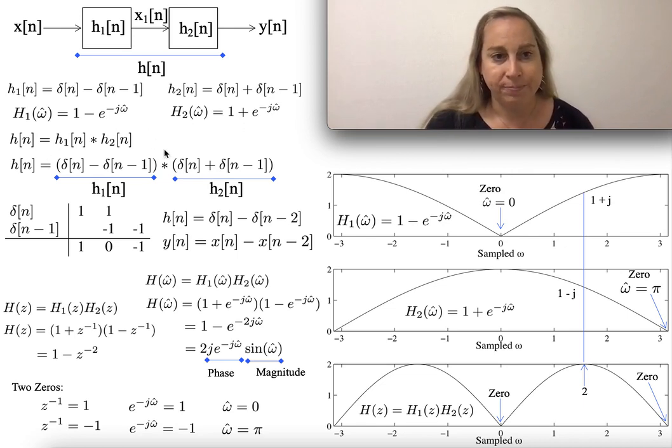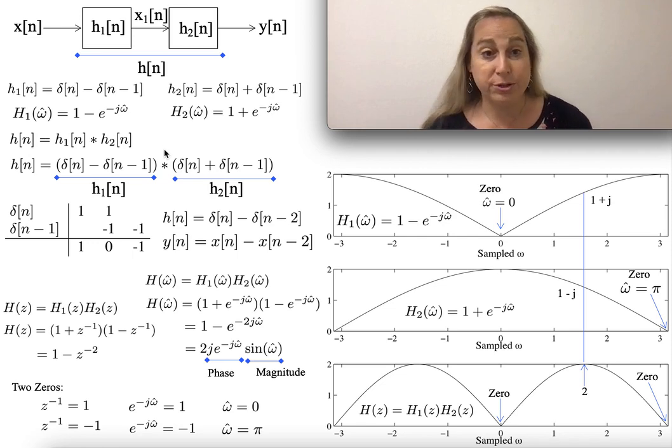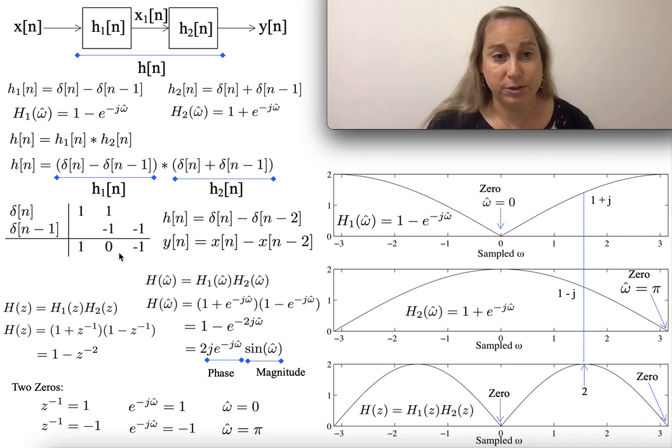Now you say, well, what is the transfer function of h? Well, one way to approach it is just convolve them. I take the two of them, convolve h1 and h2. In fact, you might go and build a small sort of thing looking at δ[n], δ[n-1], sum everything up, and what you get is that, oh look, my h[n] is δ[n] minus δ[n-2].